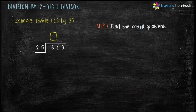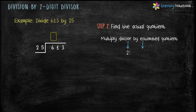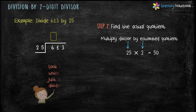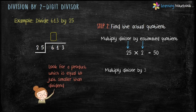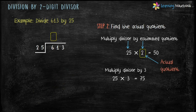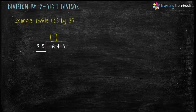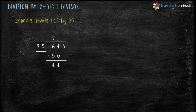Now step 2 is to find the actual quotient. Multiply divisor 25 by estimated quotient 2 and we get 50. But 50 is less than 61. So we will try multiplying the divisor by 3. 25 into 3 equals 75. But 75 is greater than 61. So the actual quotient is 2. Now let's continue with the long division. 25 into 2 equals 50, and 61 minus 50 equals 11.